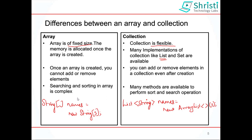In case of an array, searching and sorting is very complex — meaning you need to write the algorithm for searching and sorting yourself. In case of collections, there are many methods available to perform sort and search operations. So this is the difference between array and collection.